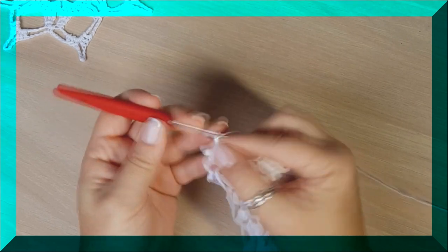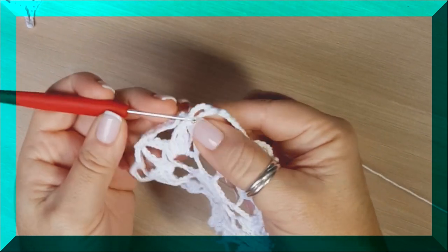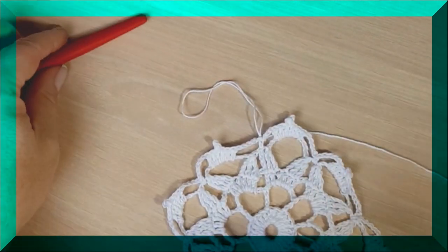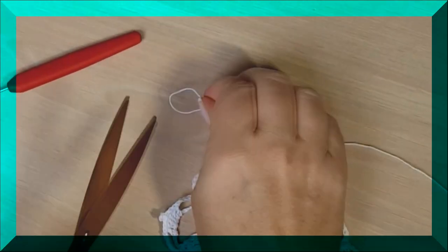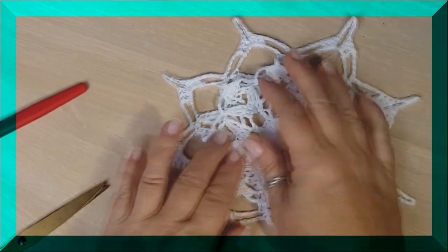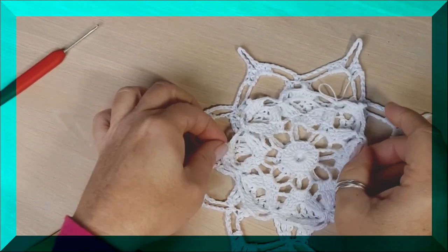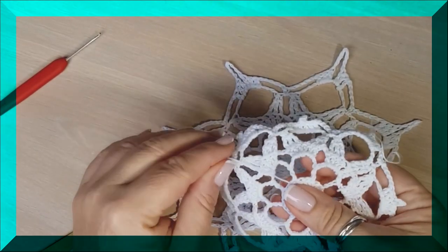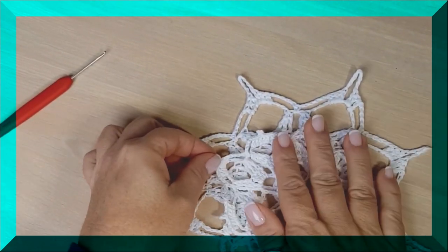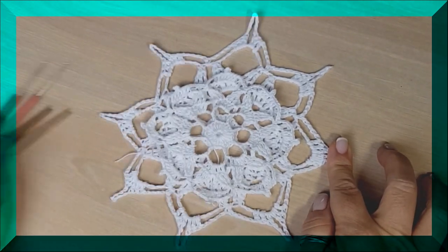Bueno, pues ahora ya las últimas cinco cadenitas. Tres, cuatro y cinco para unirme a la primera de las cadenas que hiciera. Con un puntito deslizado, cadenita al aire y lo tenemos. Vamos a cortar la hebra y después ya solo nos queda esconderlas. Yo me encanta remarcar la diferencia de tamaño entre tejer con un gancho del 2 y un gancho de 3 milímetros. Es muy grande la diferencia. Fijaros. Hay todo hasta aquí porque le he quitado el piquito. Fijaros cuánto de diferencia hay entre tejer con un 2 o tejer con un 3.